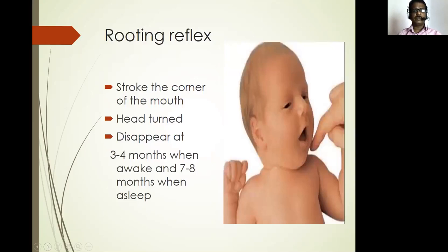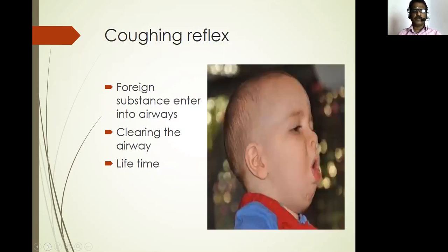Rooting reflex: stroke the corner of the mouth of the newborn — the response is the head turns towards the touch. It disappears at three to four months when awake and seven to eight months when asleep. Coughing reflex: when foreign substances enter into the airways, the child tries to clear the airway by coughing. This is also present throughout lifetime.